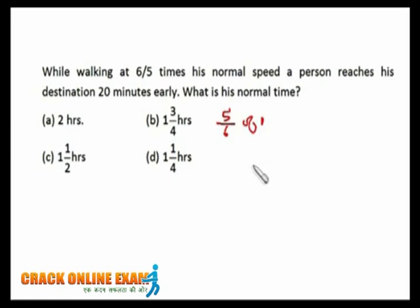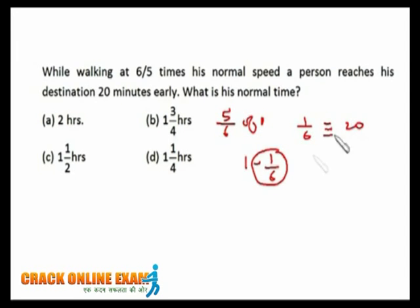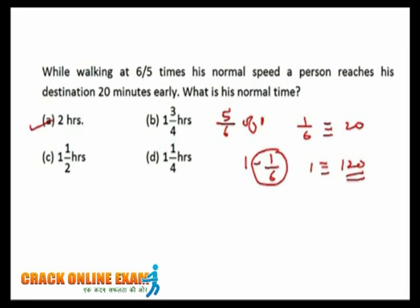Five-sixths of the normal time means he's taking one-sixth less than normal. That one-sixth corresponds to 20 minutes, since he's arriving 20 minutes early. So if one-sixth equals 20 minutes, then one — the normal time — equals 120 minutes, which is two hours. If you're conceptually clear about the speed-time relationship, you can solve these problems mentally.